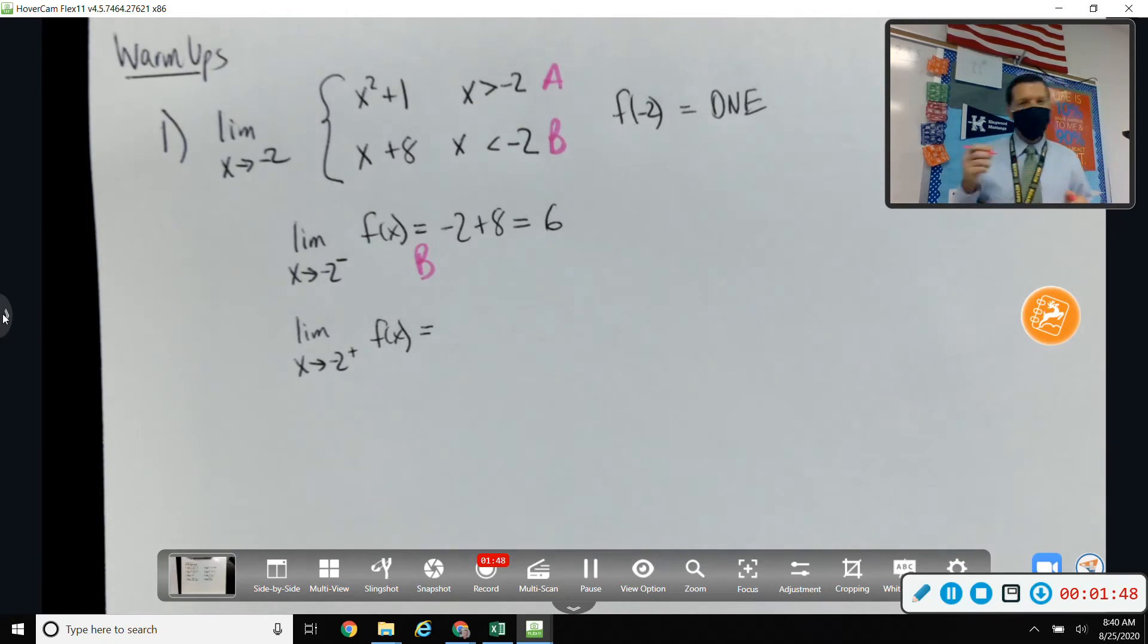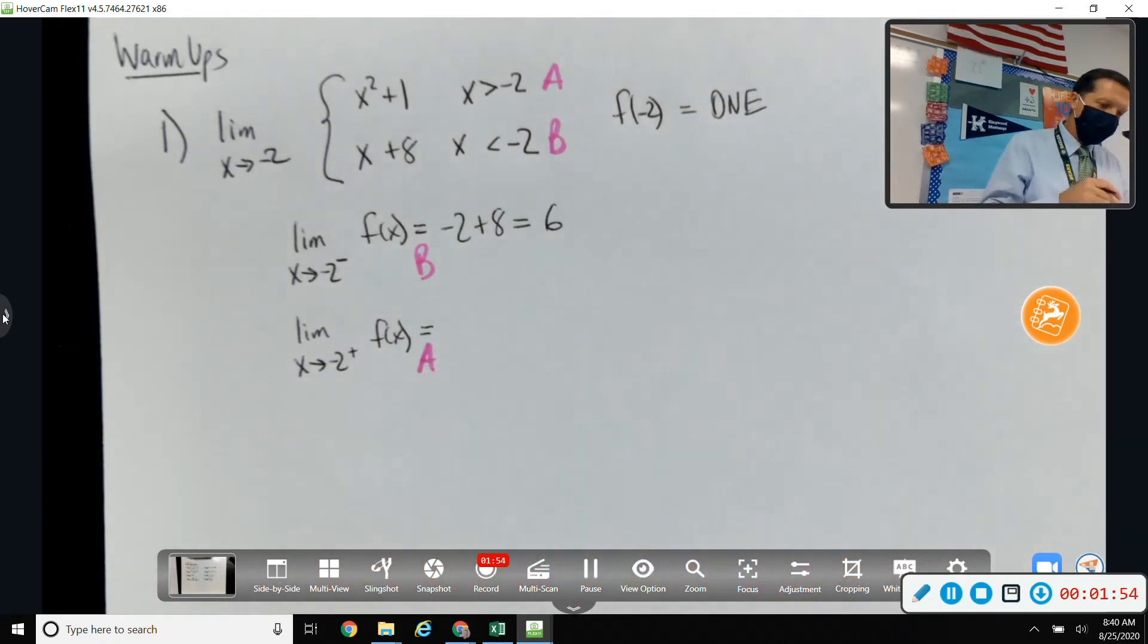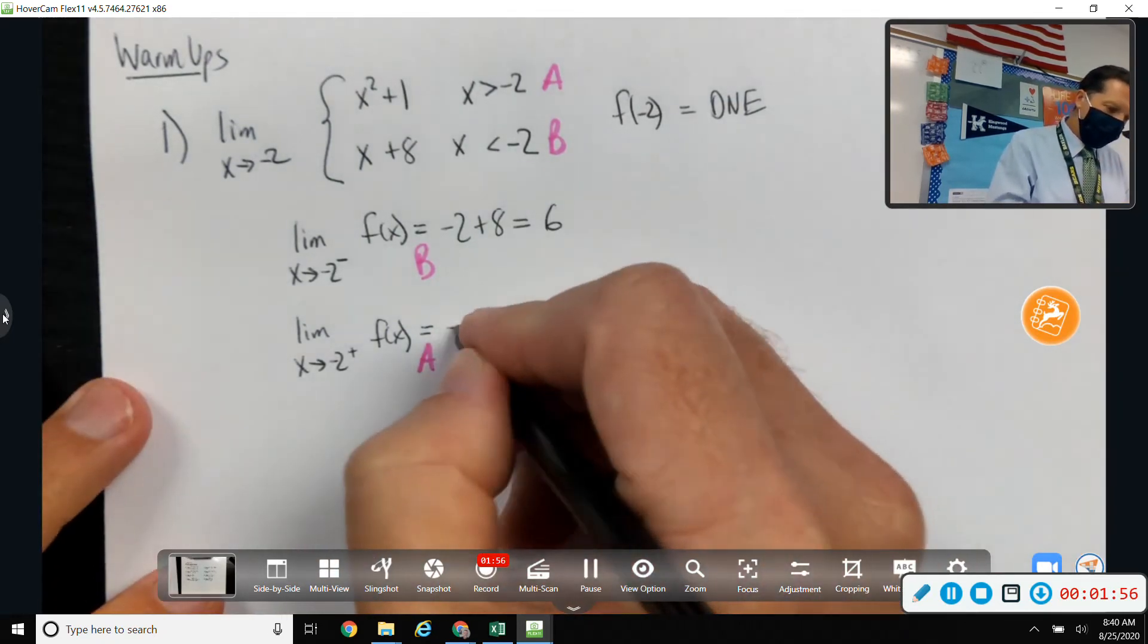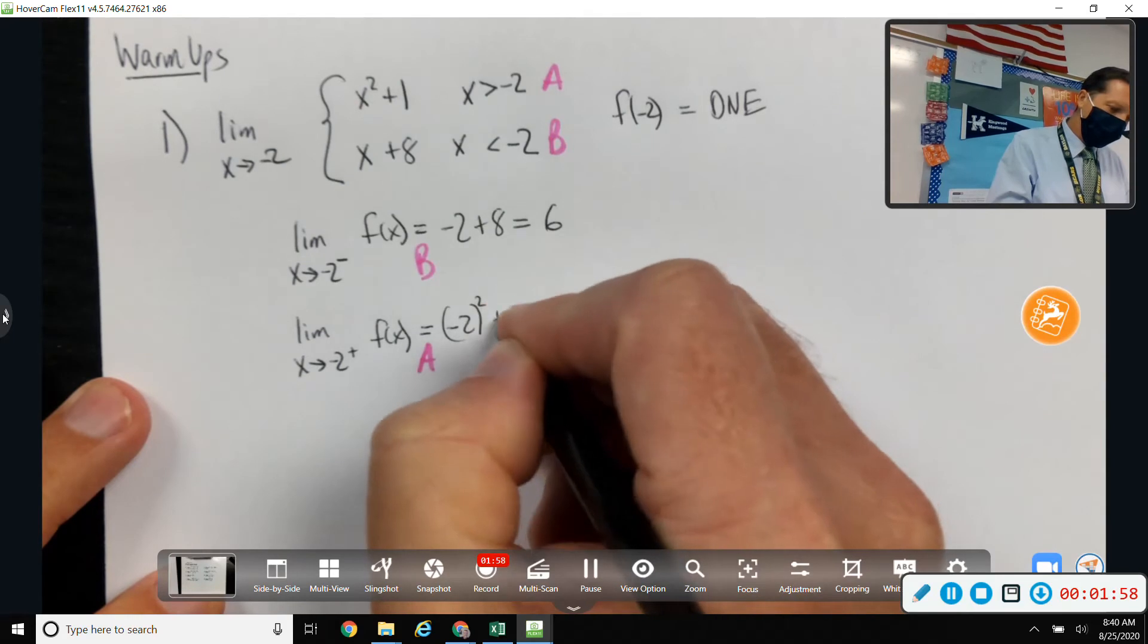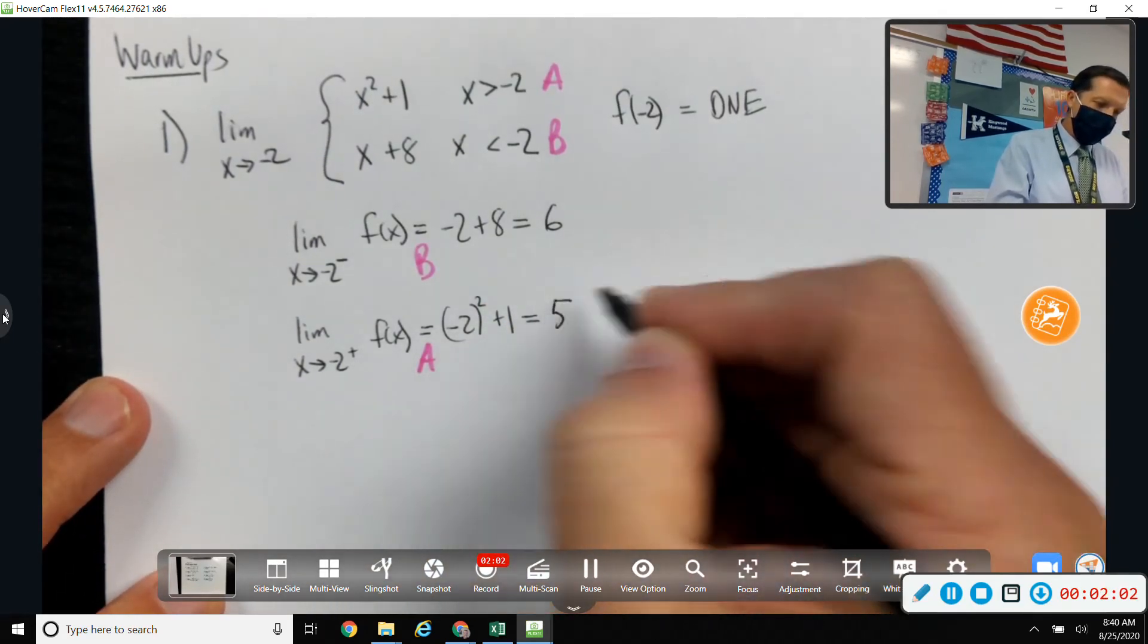So as x approaches negative 2 from the right, so a little bit more than negative 2, a little bit greater than negative 2, that would be on branch A. So the square of negative 2 plus 1, 4 plus 1 is 5. Okay.